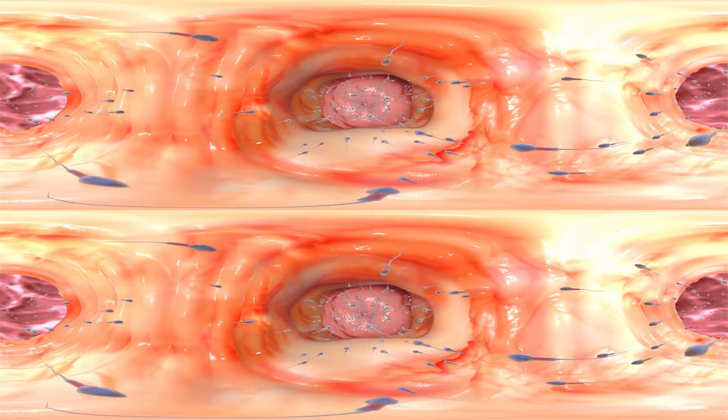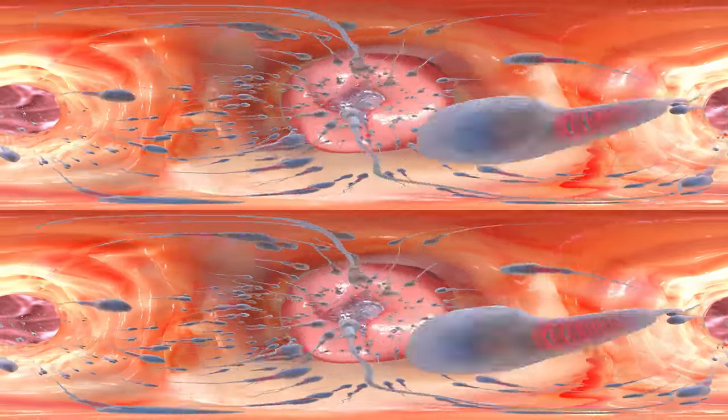To enter the uterus, sperms first need to pass the cervix, which is open while the woman ovulates. However, some sperms will not make it into the uterus.